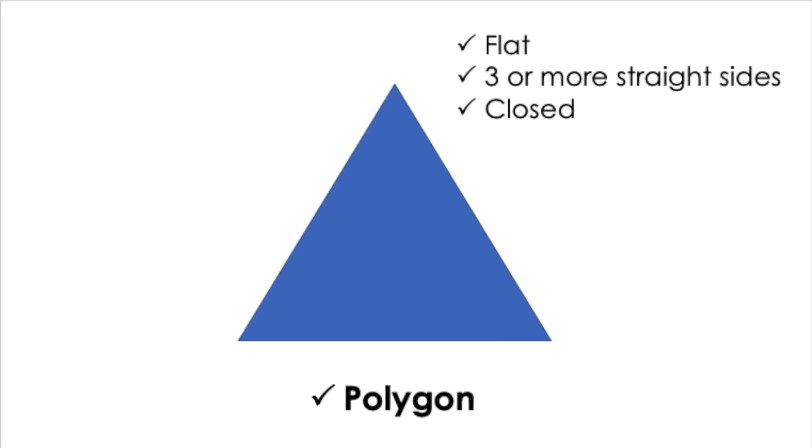Let's practice identifying the defining and non-defining attributes of this triangle. First we'll say the attributes that are always true for every triangle. A triangle always has three sides. It always has three vertices. It is always a closed shape since the sides meet at the vertices. And it will always be a polygon since it is flat, has three straight sides, and it is closed.